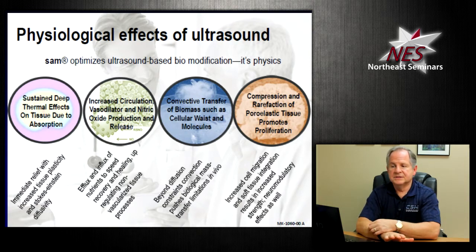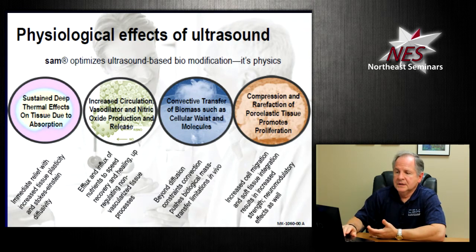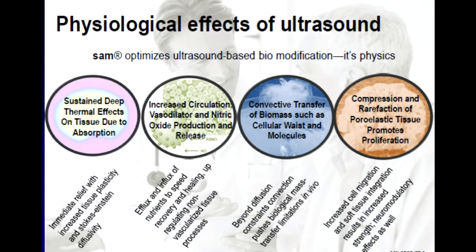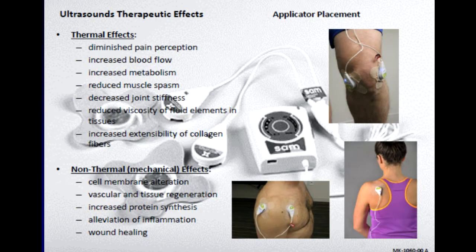The physiologic effects of ultrasound are similar to other modalities: pain relief, stimulating a healing response, circulatory and vasodilation effects, and nitrous oxide production. The thermal effects are well documented — diminishing pain, increasing blood flow, increasing metabolism, and reducing muscle spasm. It's very good for collagen and reducing stiffness. The non-thermal effects include cellular membrane alterations, changes in vascularity, modulation of inflammation, and promotion of wound healing.